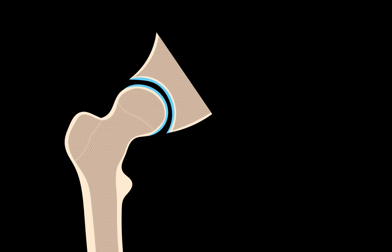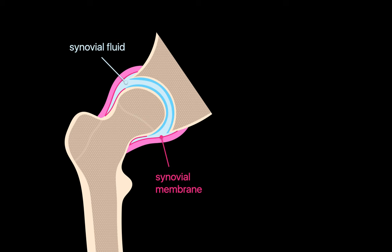Bones articulate at joints, and these joints are held together by a joint capsule and ligaments. A small amount of synovial fluid, produced by a thin layer of cells lining the joint space called synovial membrane, is also present within the joint space, which further reduces friction.